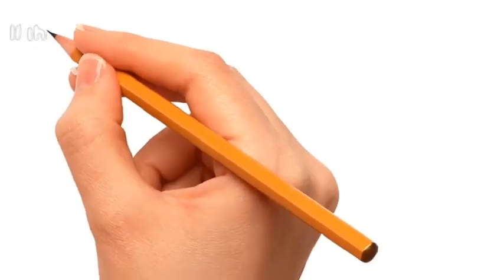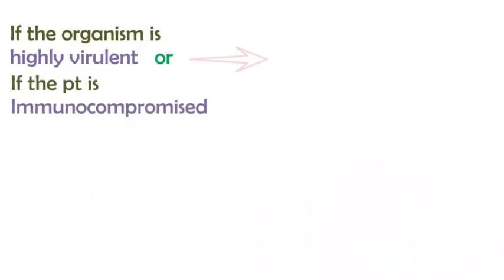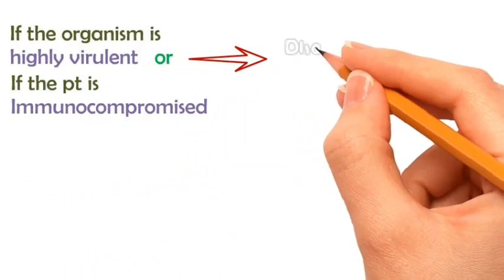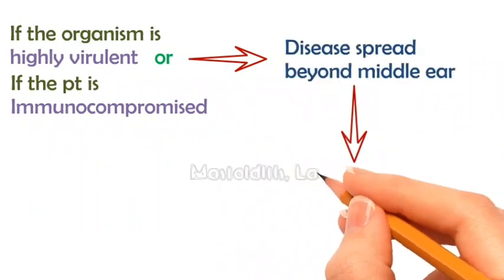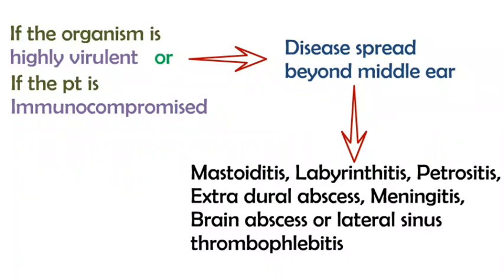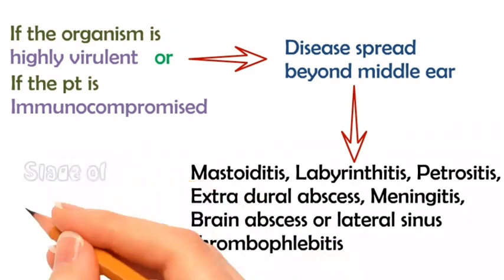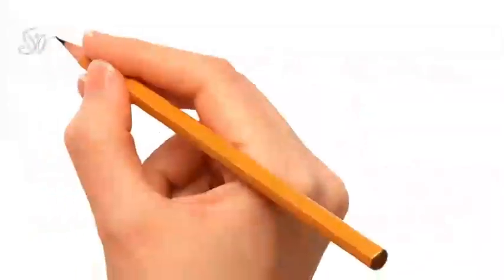In cases of highly virulent organisms or in immunocompromised patients, resolution may not occur and the disease spreads beyond the middle ear cavity. This may lead to mastoiditis, labyrinthitis, petrositis, extradural abscess, meningitis, brain abscess, or lateral sinus thrombophlebitis. This is called the stage of complication.